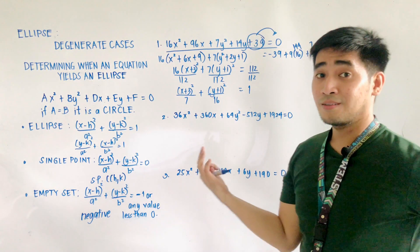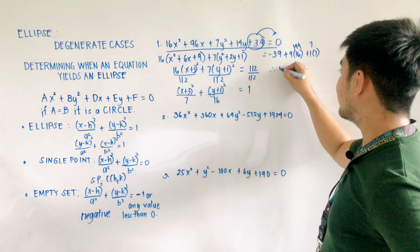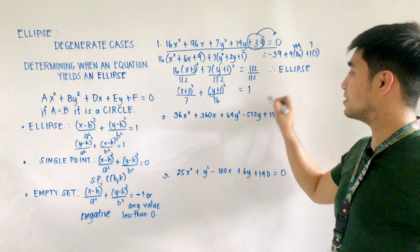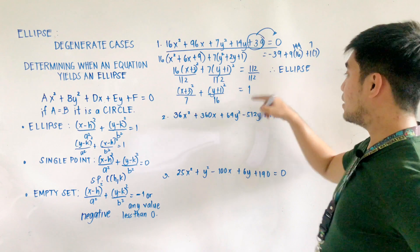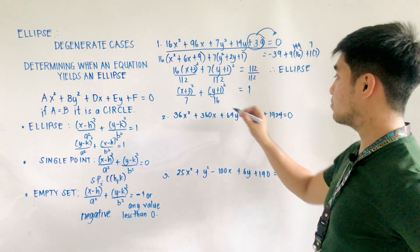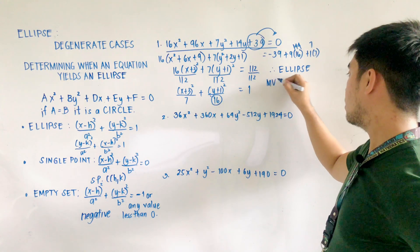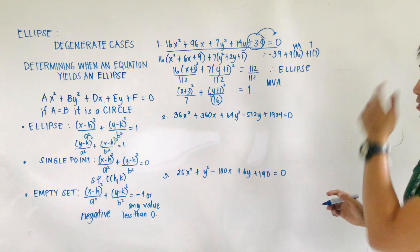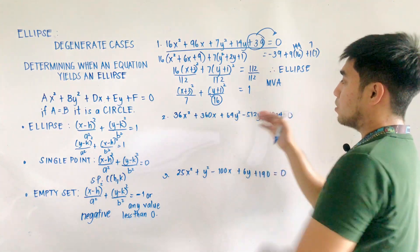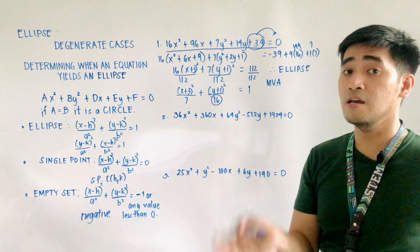This equation is an ellipse in standard form. It is an ellipse since the right side is equal to 1 and the major axis is vertical, because 16 is greater than 7. This equation satisfies all the conditions of being an ellipse.